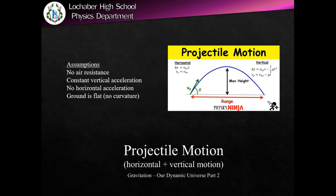We're also going to presume that air resistance is effectively zero. That works just fine if you have a reasonably dense object that you're throwing and you're not going at particularly high speeds. The third assumption is that the ground is effectively flat. I'm not saying the whole planet's flat — I'm just saying that our range here is small enough that you don't have to account for the curvature of the Earth.